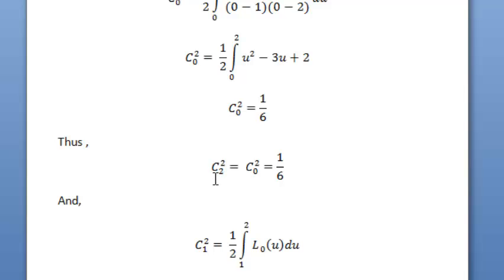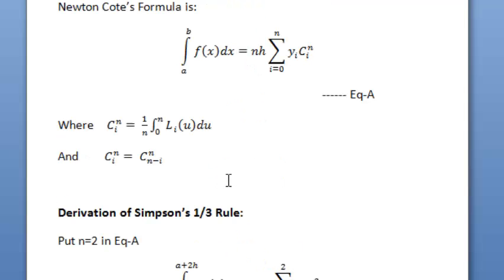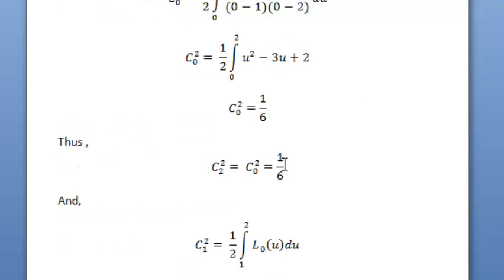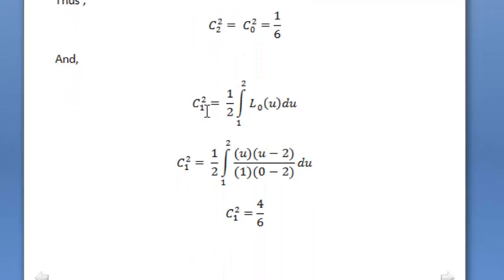To calculate c₂₂, we use the symmetry formula c_in equals c_(n-i)_n. Here i equals 2 and n equals 2, so we get c₂₂ equals c₀₂, which is also 1/6. For c₁₂, we compute 1/2 times the integral from 0 to 2 of l₁(u) du, and evaluating this gives c₁₂ equals 4/6.